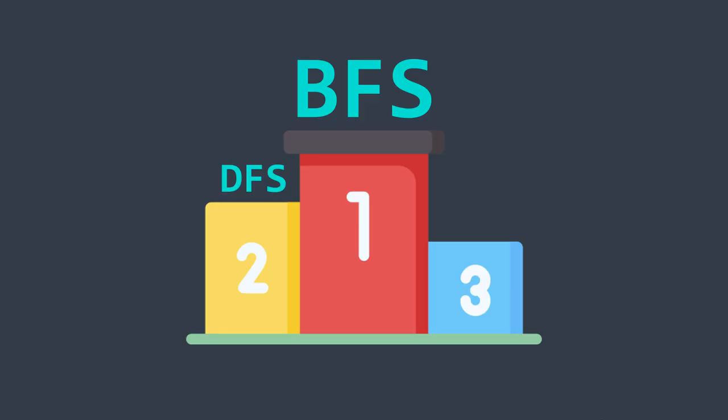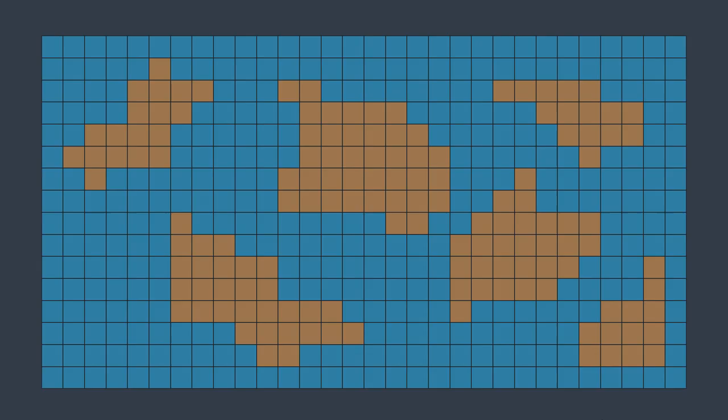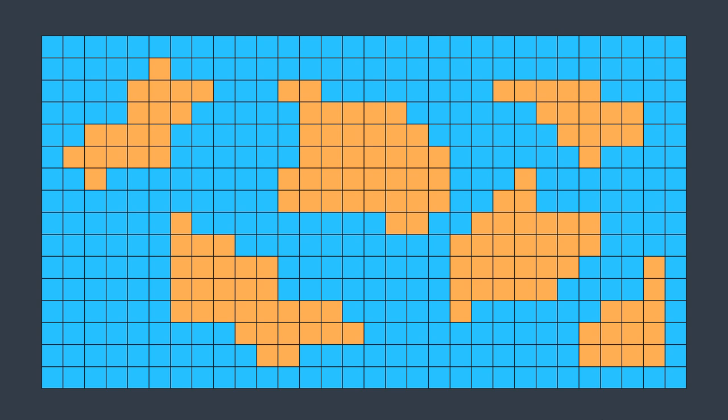Three things before ending this video. First, the BFS approach is usually more preferable than the DFS one because it doesn't require call stack space, which can be limited sometimes, and it also starts by visiting closer cells, which is better when searching for the shortest distance. Second, there exist Python libraries to Flood Fill an image — you don't need to implement the algorithm yourself; we did it here for learning purposes. Third, what if we have a grid made of land and water — how can we use the Flood Fill algorithm to count the number of islands? For example, here we have 6 islands. Try to think about it; we will solve it in the next video. Subscribe to the channel to not miss it. I hope you enjoyed this video — leave a like and a comment and see you in the next one.